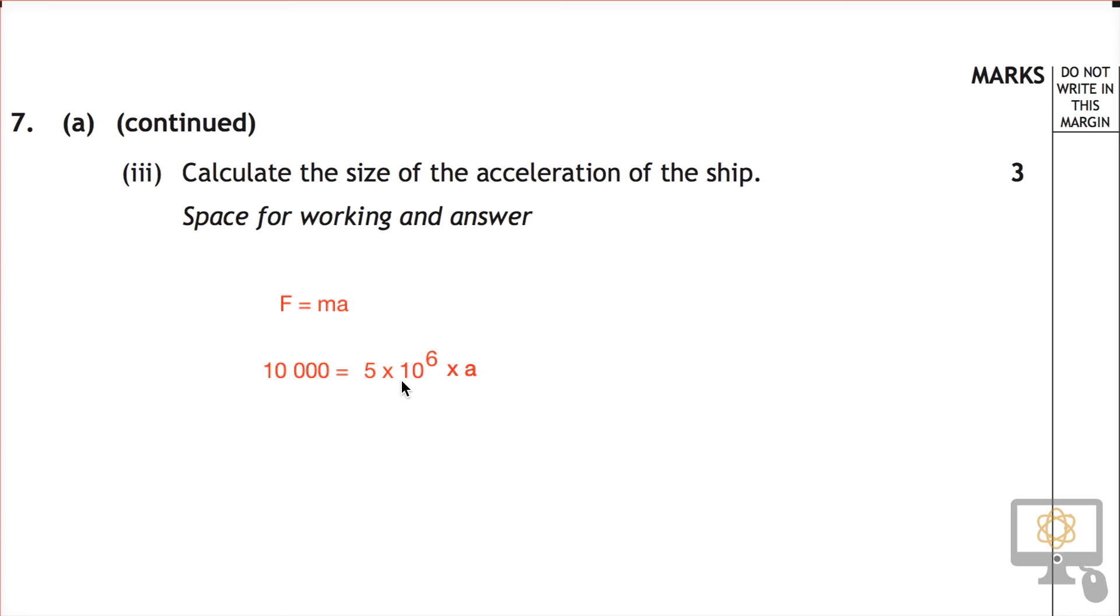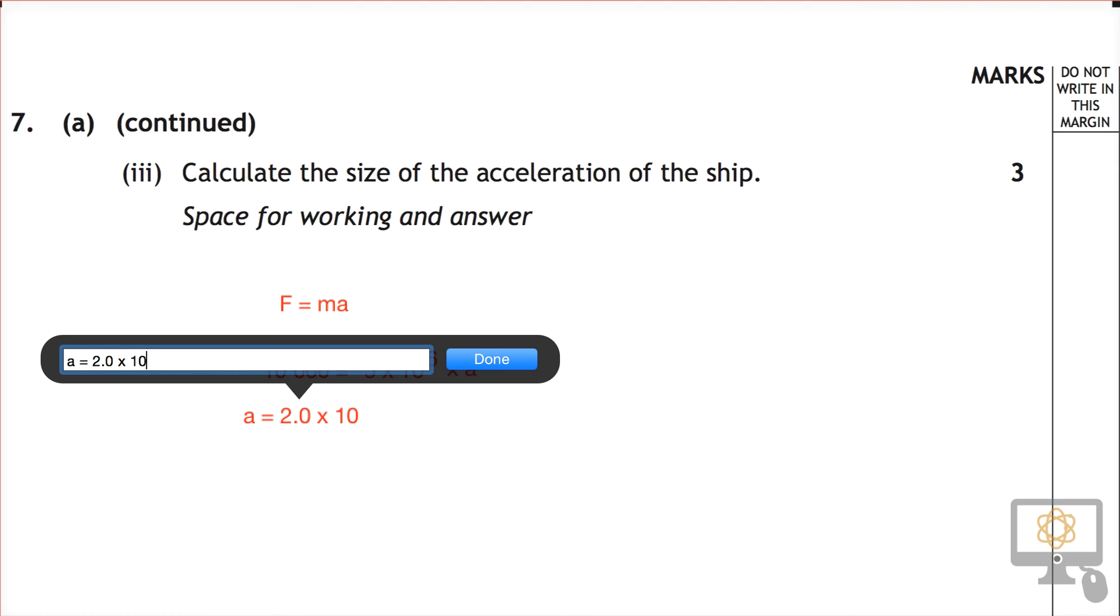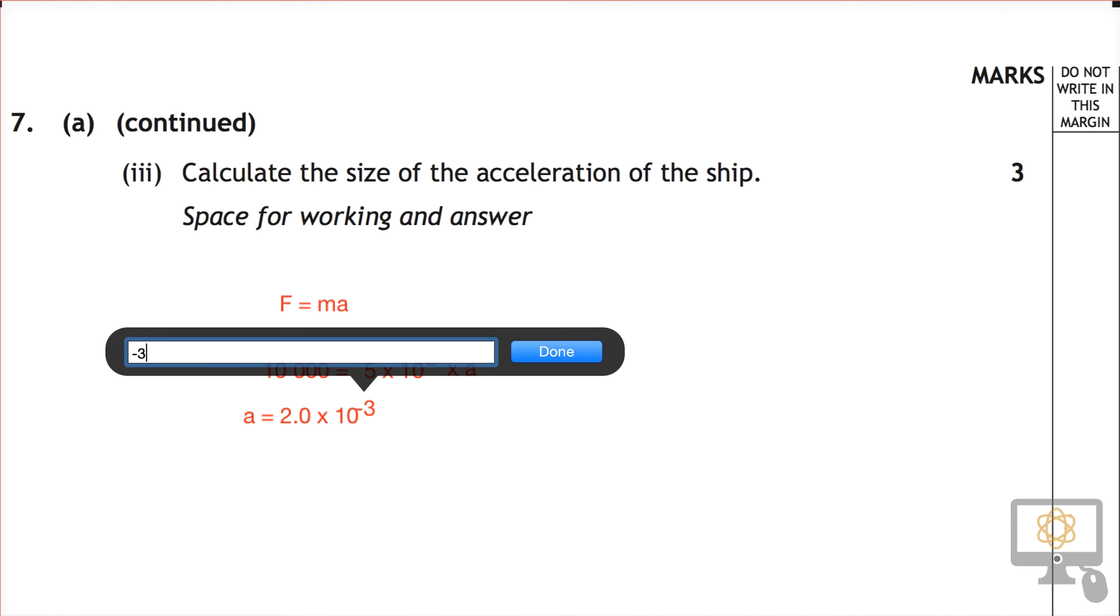The force is equal to the mass times the acceleration. So to determine the acceleration, we need to do 10,000 divided by 5 times 10 to the power of 6. So you get your calculators out. You do 10,000 divided by 5 times 10 to the power of 6, and you get 2.0 times 10 to the power of minus 3.